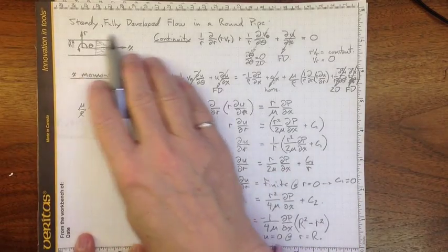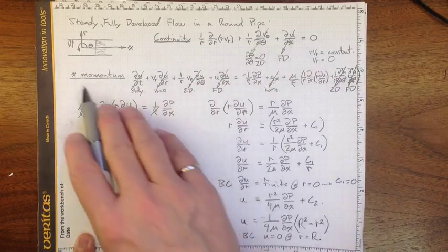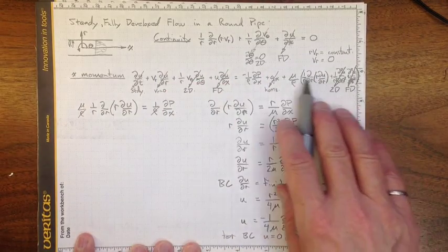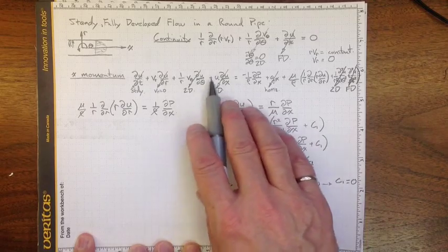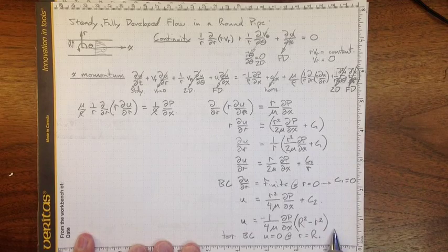We already know that if we take a steady, fully developed flow in a round pipe and use continuity and the x-momentum Navier-Stokes equation in polar cylindrical coordinates,